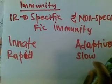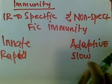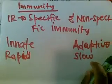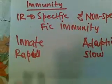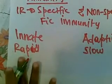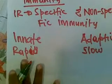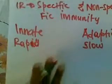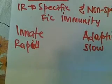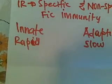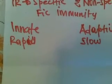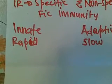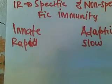Regarding response to repeat infectious exposure, innate immunity responds similarly with each exposure — the response is the same for each microbe. In adaptive immunity, immunological memory makes the response more rapid and efficient with subsequent exposure.